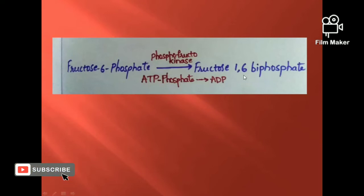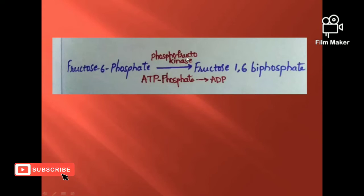So we have fructose-1,6-bisphosphate formed in the presence of enzyme phosphofructokinase, because a phosphate molecule is transferred from ATP to the fructose molecule by the kinase.